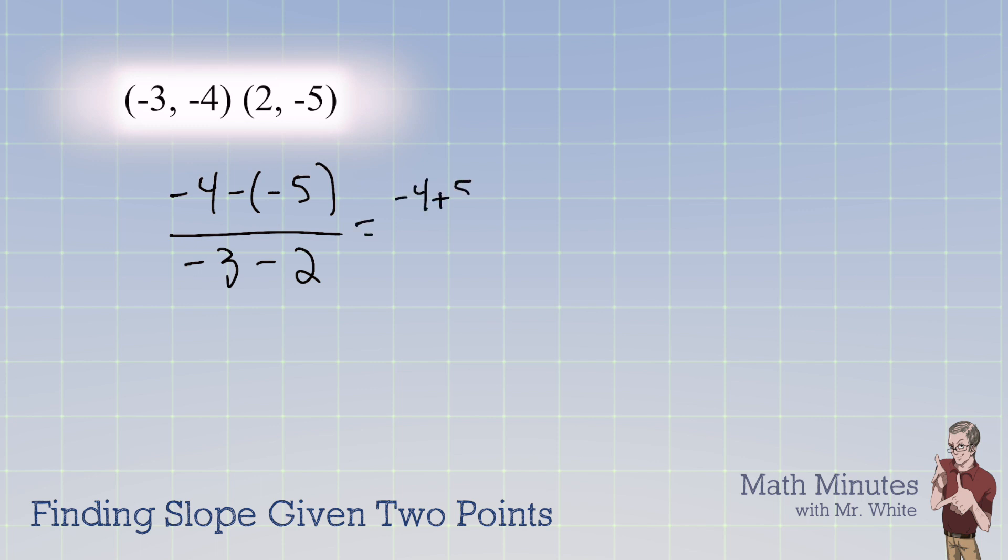We get negative 4 plus 5 on the top. And on the bottom, we have negative 5. So that's 1 over negative 5. So the slope is negative 1 fifth. So you can write it like this, or you can put the minus sign on the top or on the bottom. Remember, that's all the same thing. But the line is going to go down 1 to the right 5.